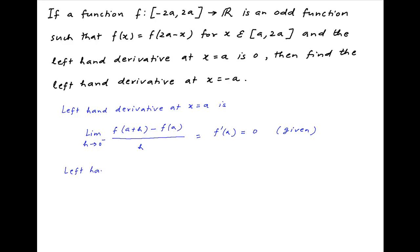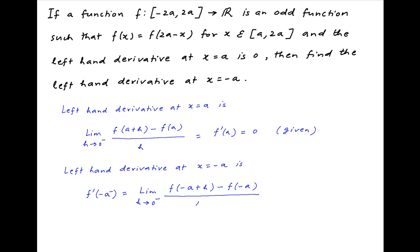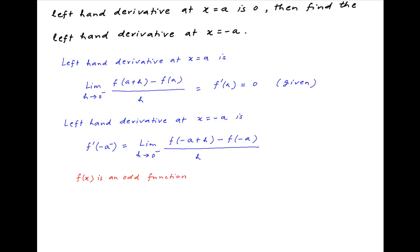Now we are required to find the left-hand derivative at x is equal to minus a. This is given by the limit h tending to 0 from the negative side of f of minus a plus h, minus f of minus a, divided by h. Since f(x) is an odd function, f of minus a plus h is equal to minus of f of a minus h. Putting h equal to 0, this implies that f of minus a is equal to minus of f of a.